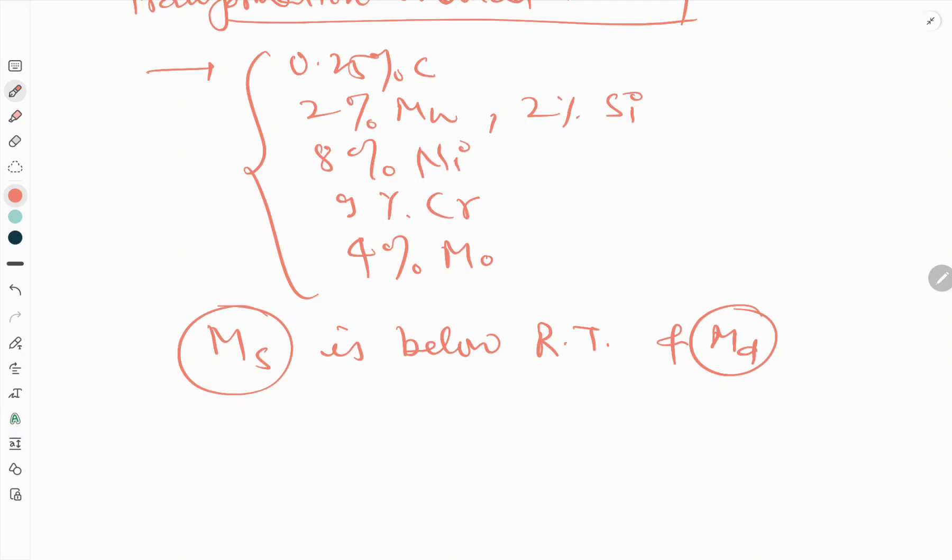Md is the highest temperature up to which deformation of austenite can induce martensite. So the Md is above room temperature. So the steel is first heavily deformed above Md to make the TRIP steel.